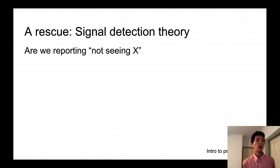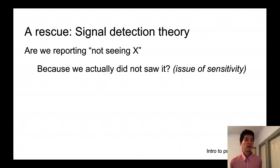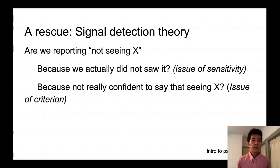And the one potential rescue is a powerful theory called the signal detection theory. This signal detection theory can discriminate between the two possibilities when you are reporting no, I didn't see X. So one possibility is that because we actually did not see the target letter. This is an issue of the sensitivity or capability or discriminability of the situation by you.